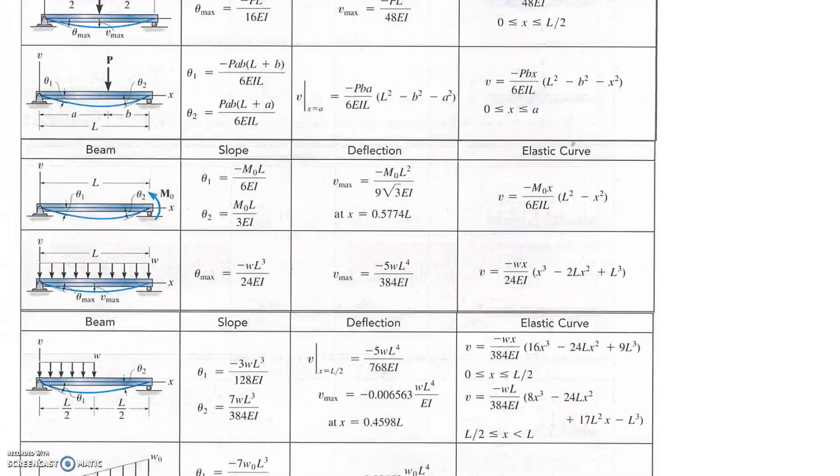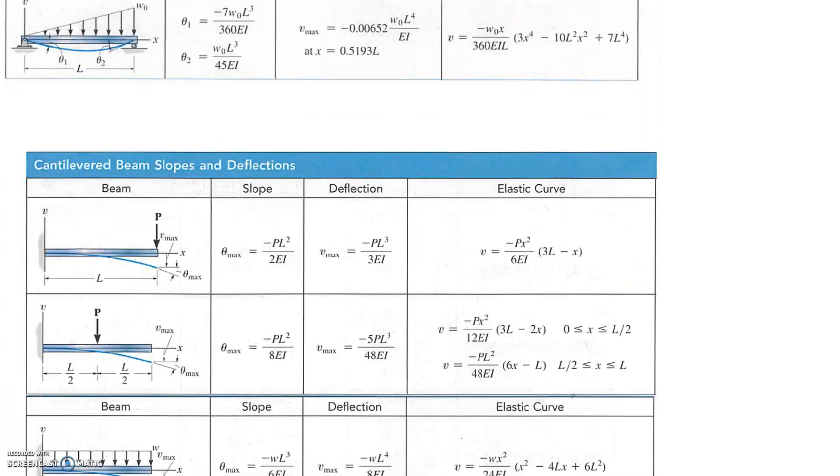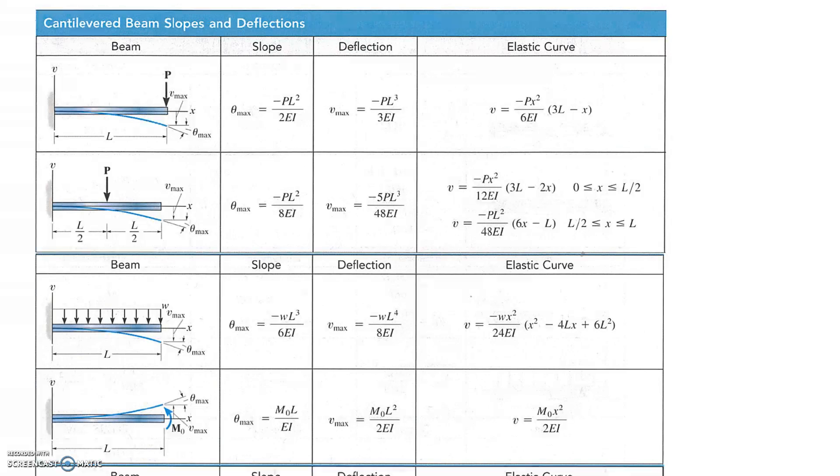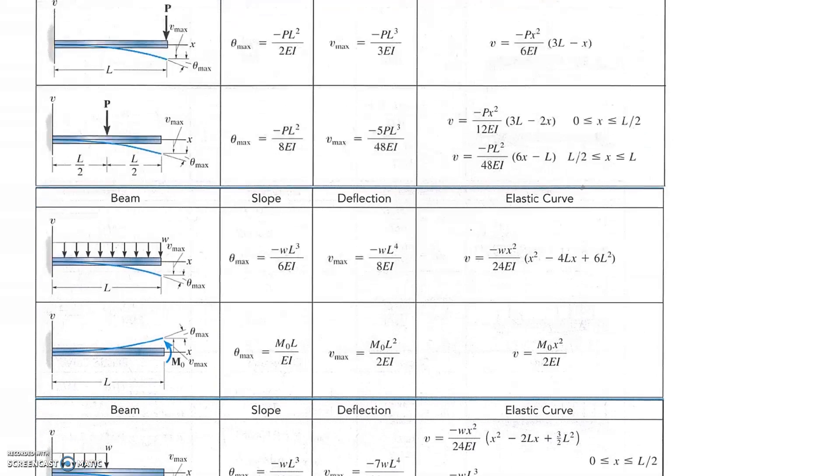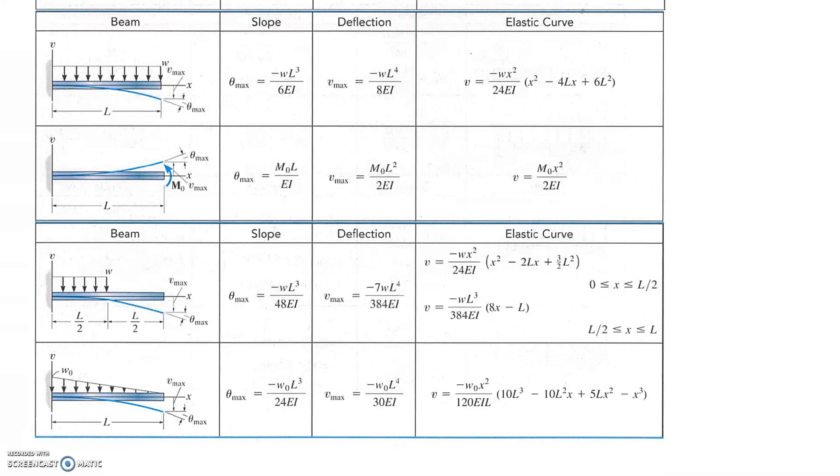You can see that there's a heap of different cases which you can just borrow. Here's a second table which has some for cantilevered beams as well. People have solved for the maximum slope and the maximum deflection that you see in the beam, and you're provided with general equations on the final column here.